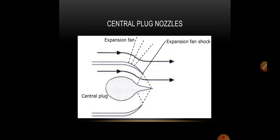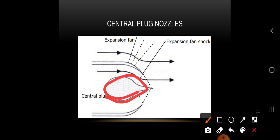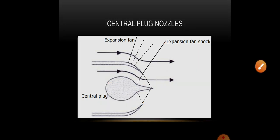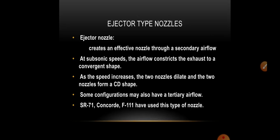A central plug is installed at the exit of the nozzle where the plug provides an expansion fan shock. Because of this expansion fan, there are variations in pressure from the starting of the exit to the end.